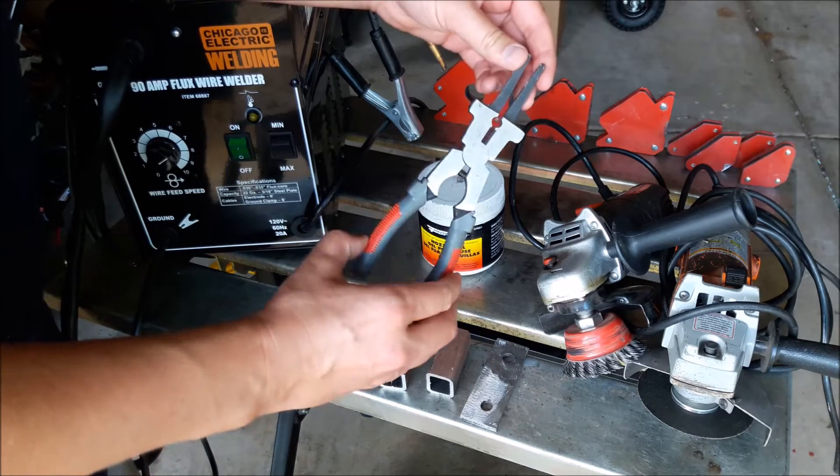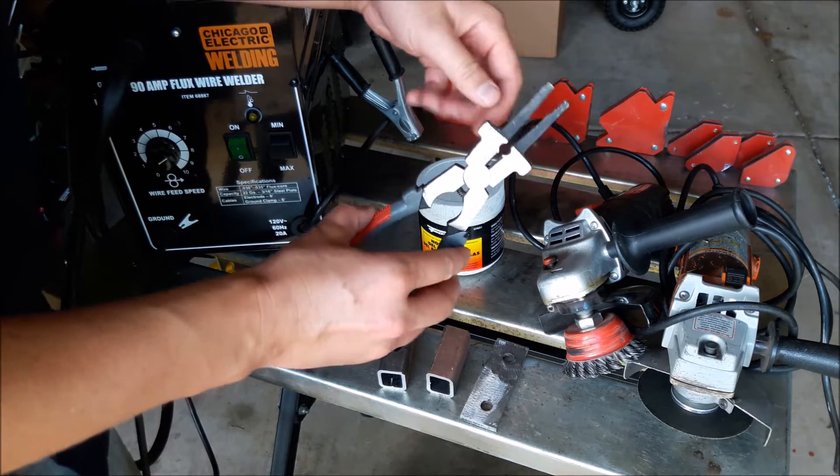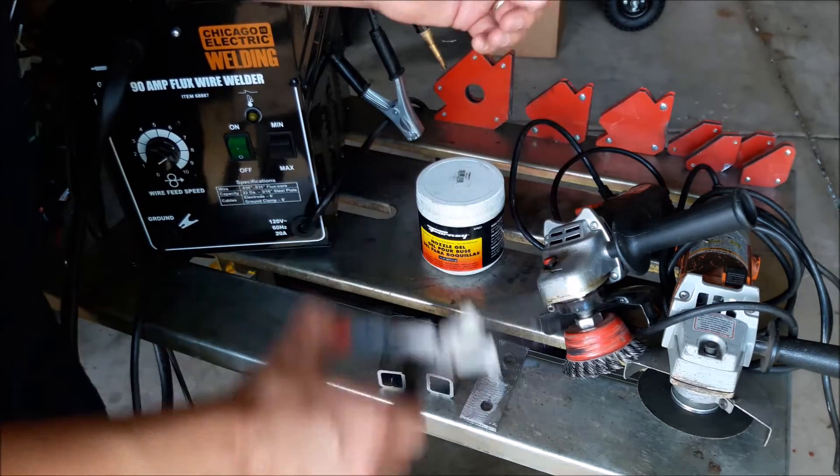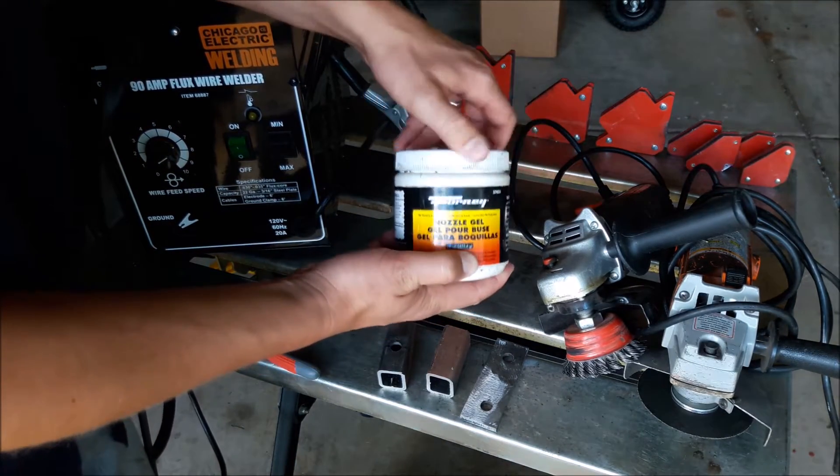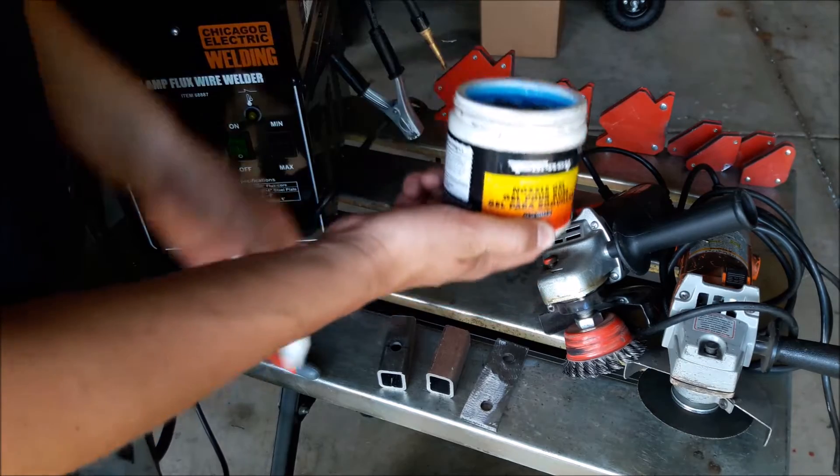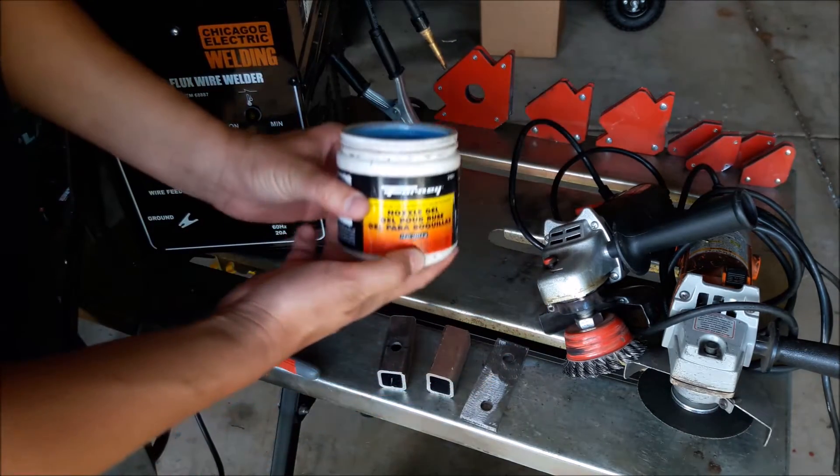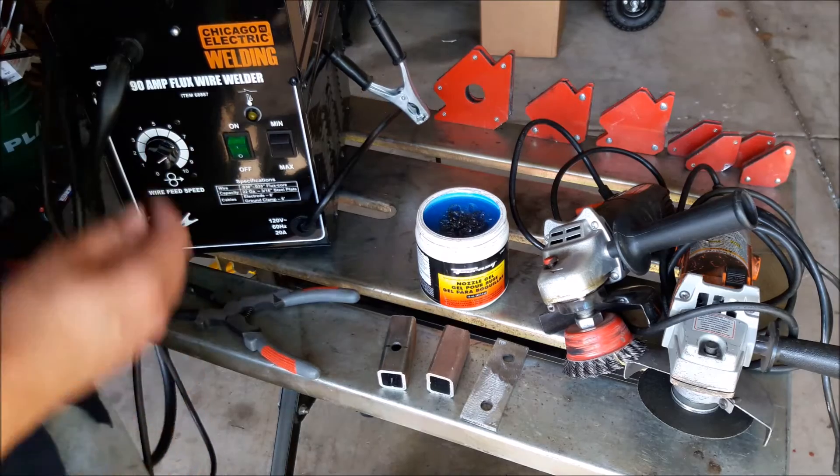Welding pliers are nice but you know what, a pair of regular pliers and cutters will work just great. But what I would consider an absolute must is nozzle gel. I've kind of mentioned it quite a bit in my other videos and some people called me out on how do you actually use it.